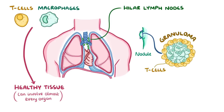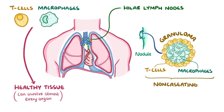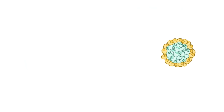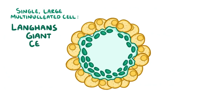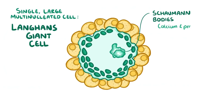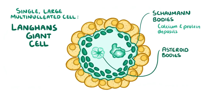These granulomas have T cells at the periphery and macrophages at the centre. The granulomas in sarcoidosis are non-caseating, which means that there's no tissue necrosis at the centre of the granuloma, unlike some other granulomatous diseases like tuberculosis. Often, macrophages fuse together to form a single large multi-nucleated cell called a Langhans Giant cell. Within the Langhans Giant cell, there are cytoplasmic inclusions called Schaumann bodies, which are made of calcium and protein deposits. There are also things called asteroid bodies, which look like tiny stars.